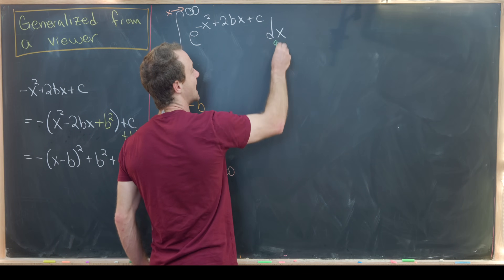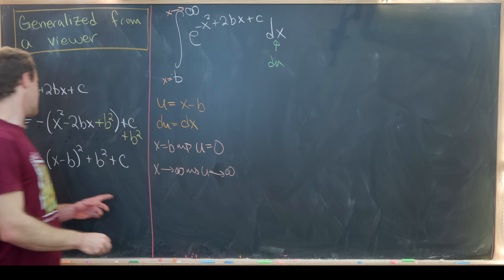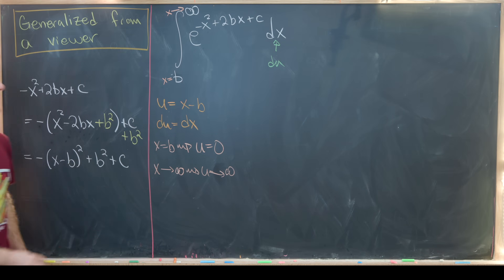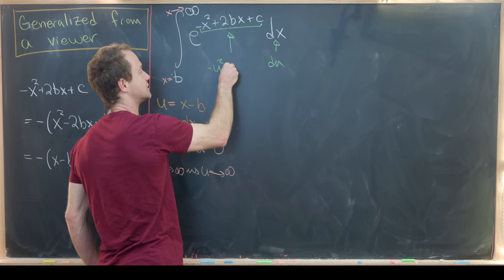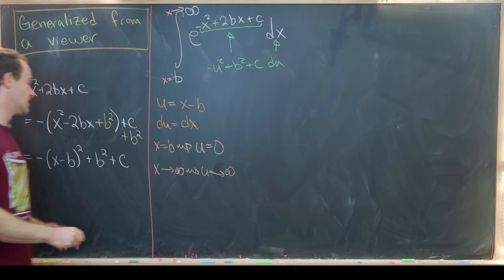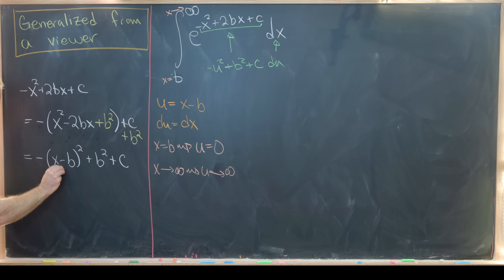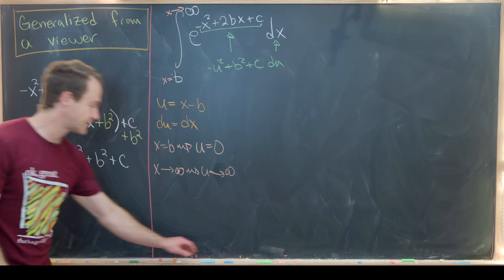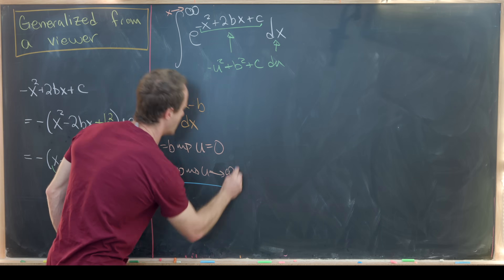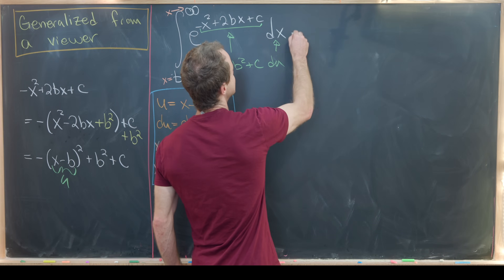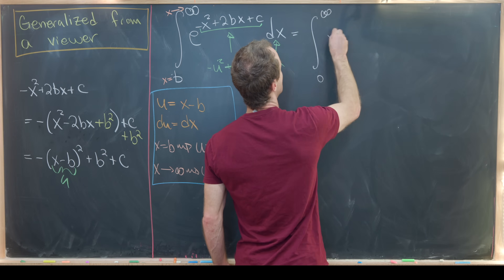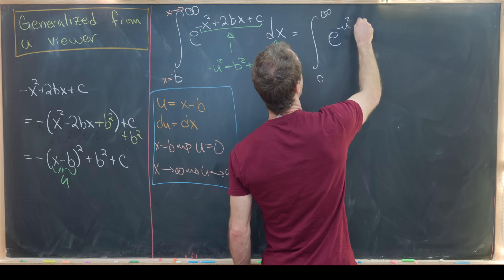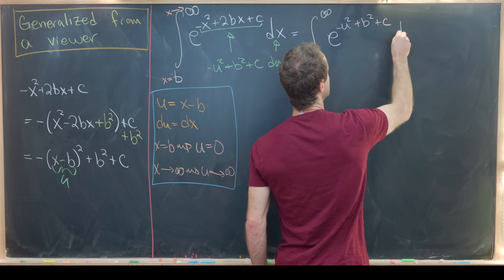The dx term will just change to du. And then this thing in the exponent will change to minus u squared plus b squared plus c, given that this is our u. So this is now the integral from zero to infinity of e to the minus u squared plus b squared plus c du.